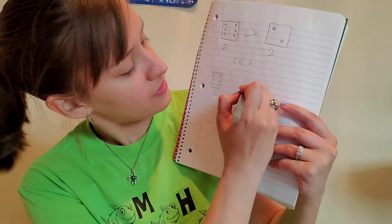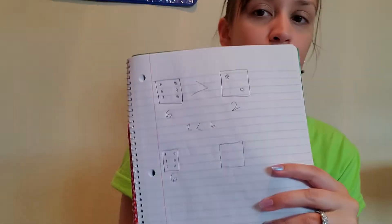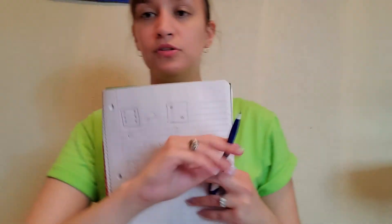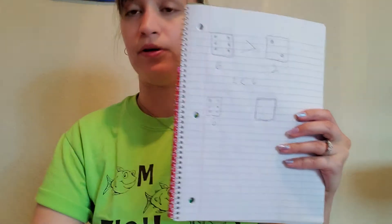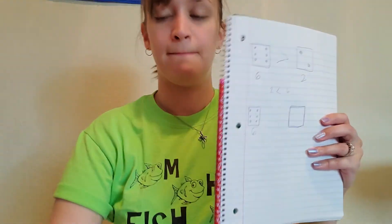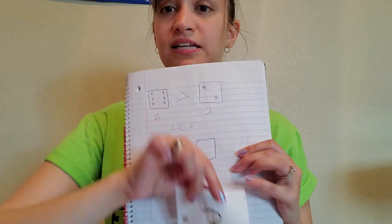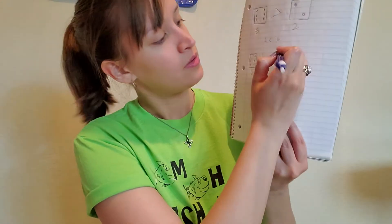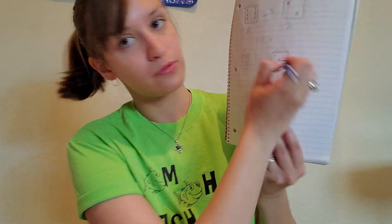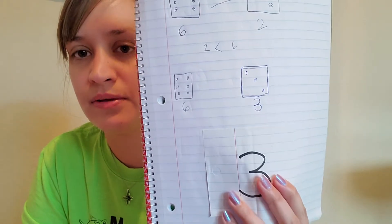And then you'll draw your next dice face. Pick out your next number from your number bucket. My next number is three. So I'm going to draw three dots on my dice face. One, two, three. And then around a tree, around a tree. That's the way to make a three.